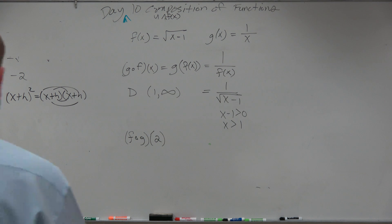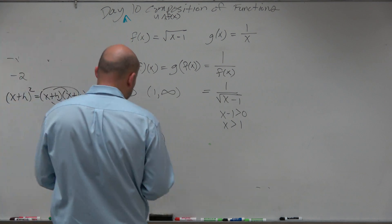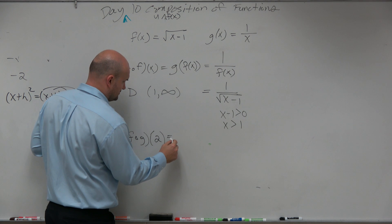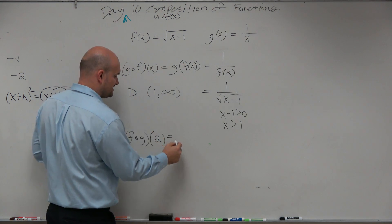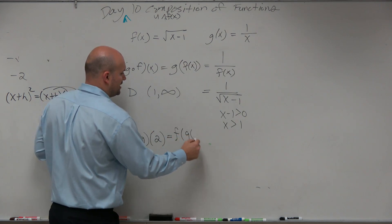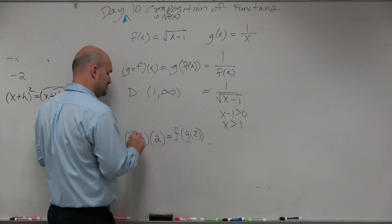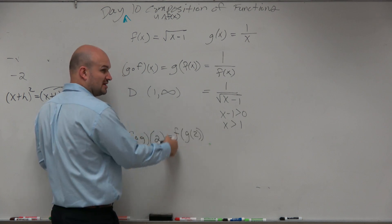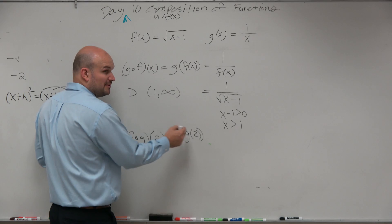Look over here. In this case, we have f of g of 2. Now, we know that in reality what this is saying is f of g of 2. You're taking the g of x function and you're plugging it into the f of x function, and we're evaluating it for the number 2.